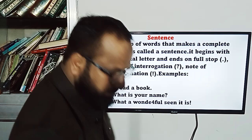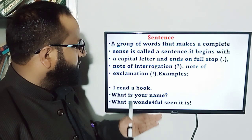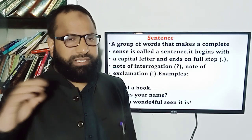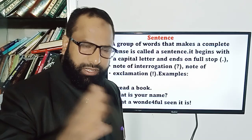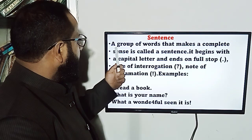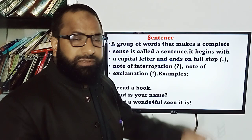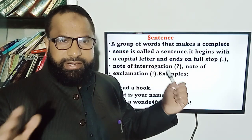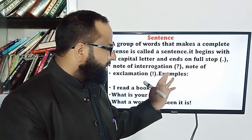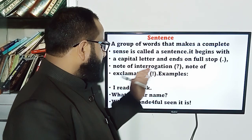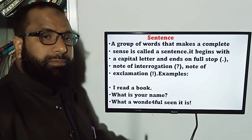Before taking on direct and indirect speech conversion, let us first understand the types of sentences. If you know the types of sentences on the basis of meaning, it will be quite easy for you to change direct speech into indirect speech and vice versa. A sentence is simply a group of words that makes a complete sense. It begins with a capital letter and ends with a full stop, note of interrogation, or note of exclamation, depending on the type.